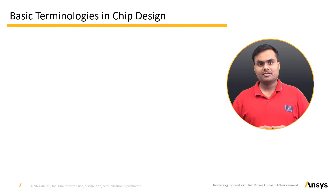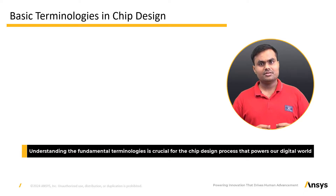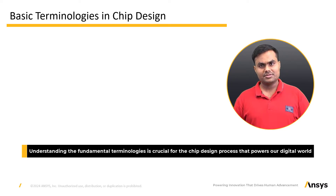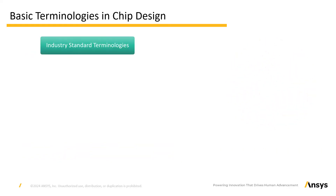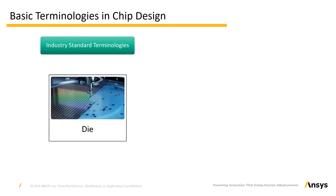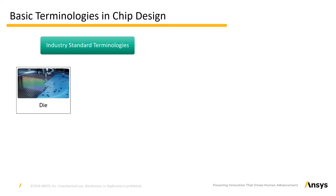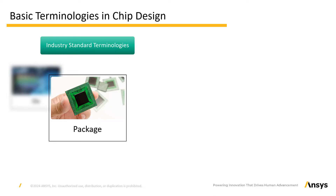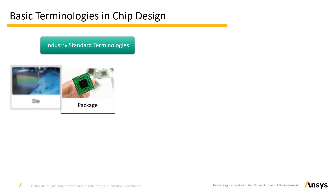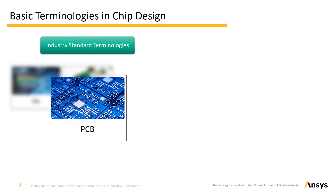Basic Terminologies in Chip Design. Let's focus on some fundamental terminologies that are crucial throughout the learning of chip design. The Die is a small rectangular piece cut from a large semiconductor wafer, containing the actual circuit that performs various functions. The Package is like a protective shield around the semiconductor die — it provides physical support, electrical connections, and protection from environmental factors. A PCB, or Printed Circuit Board, is a platform that holds and interconnects various components together, including semiconductors and packages, serving as the backbone of electronic devices.